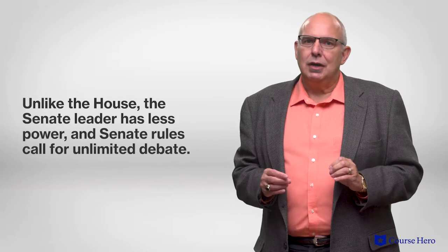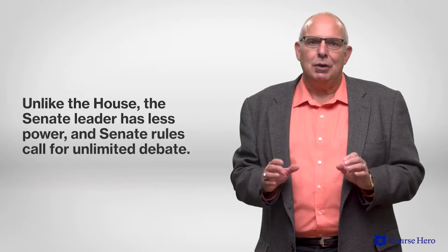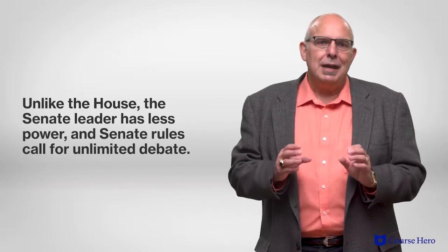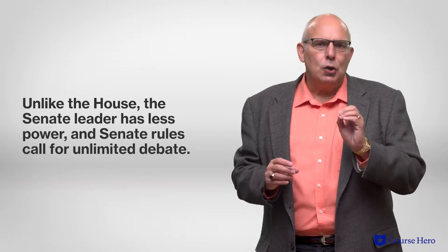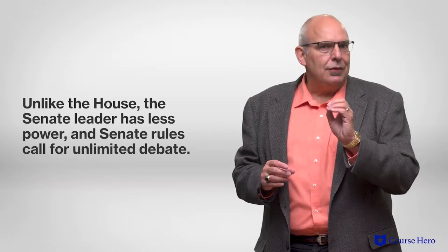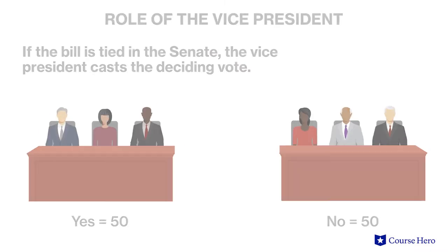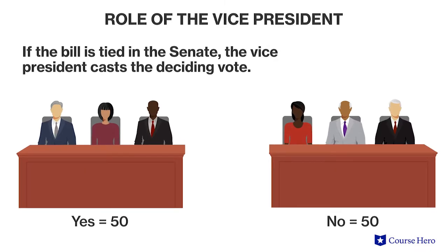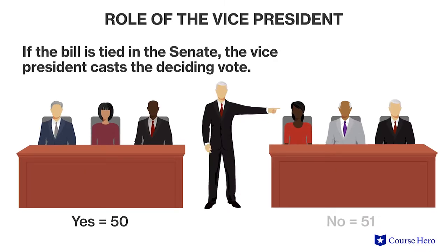The Senate Majority Leader has less power over that chamber, and Senate rules call for debate to be unlimited unless a majority votes to end the debate. Once debate begins, amendments can be added if the rules established for the bill allow it. The House or Senate then votes on the bill, which will pass if a simple majority votes in its favor. If the vote is tied in the Senate, the Vice President casts the deciding vote.